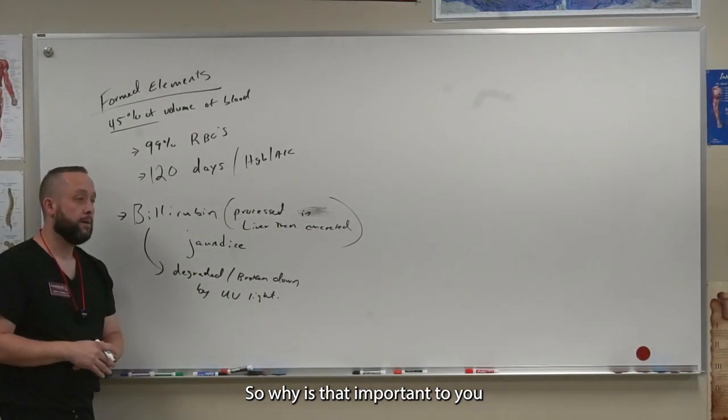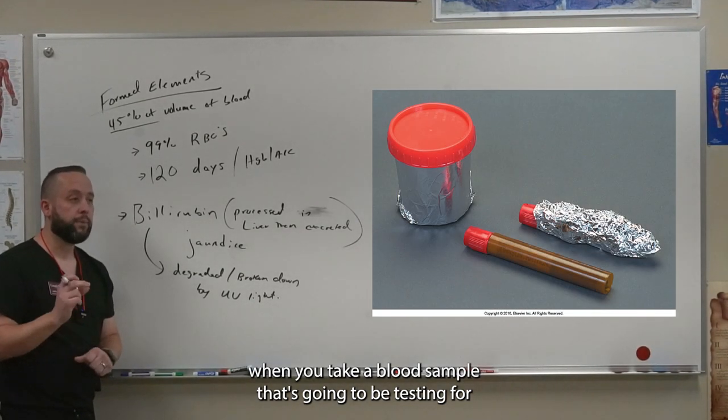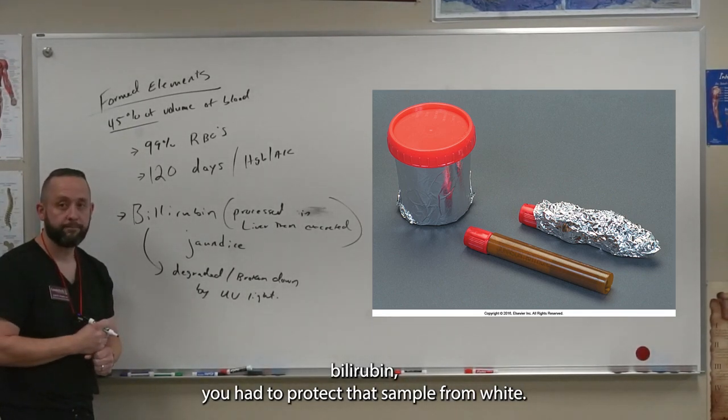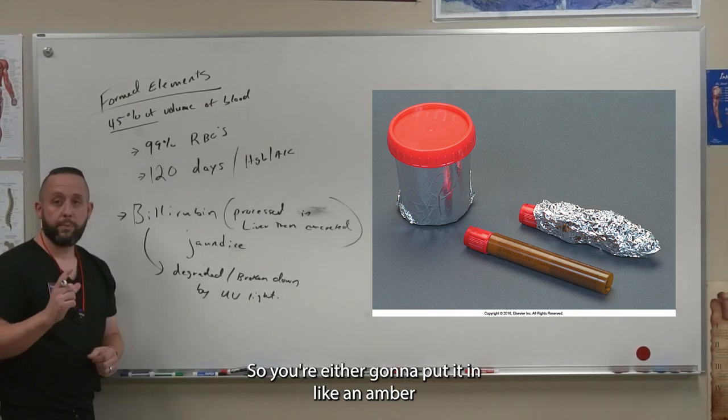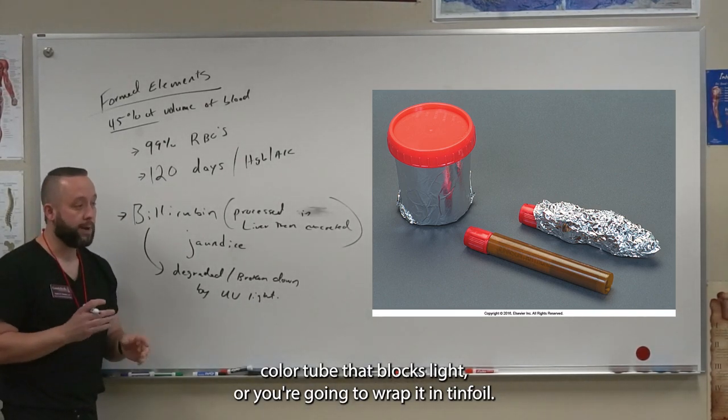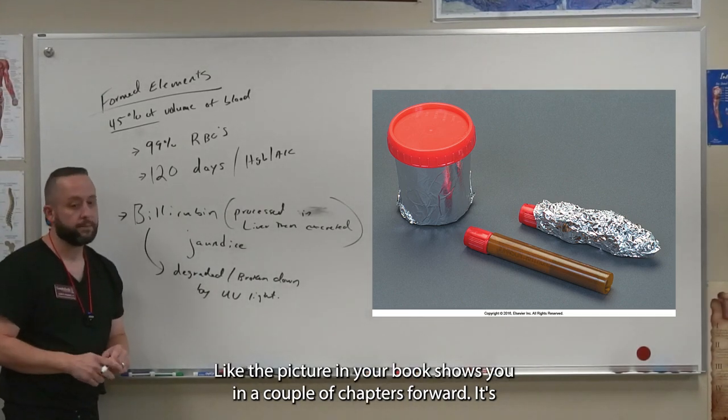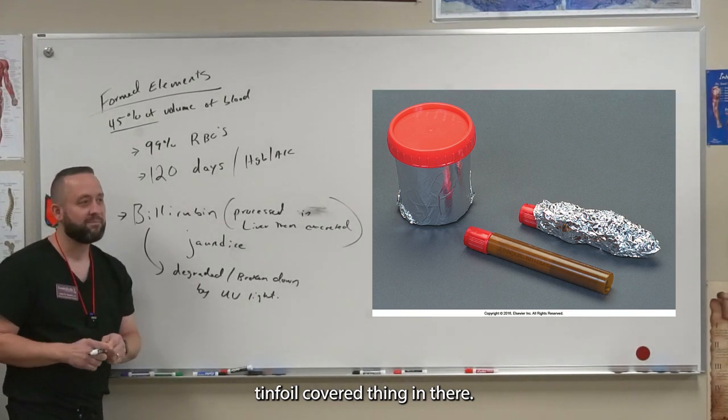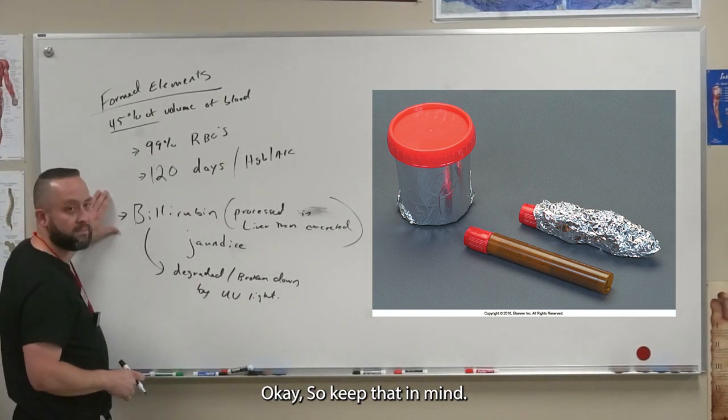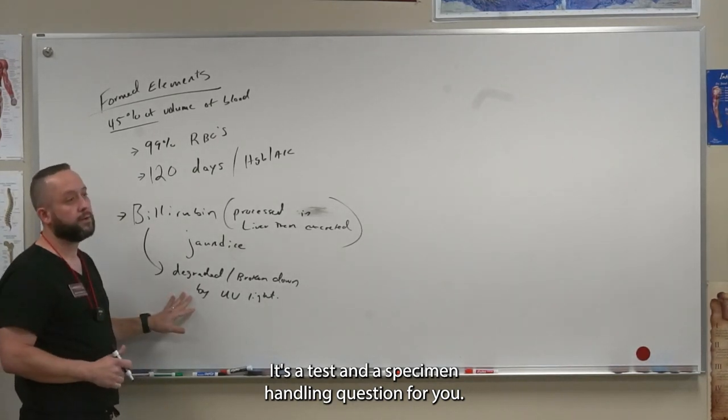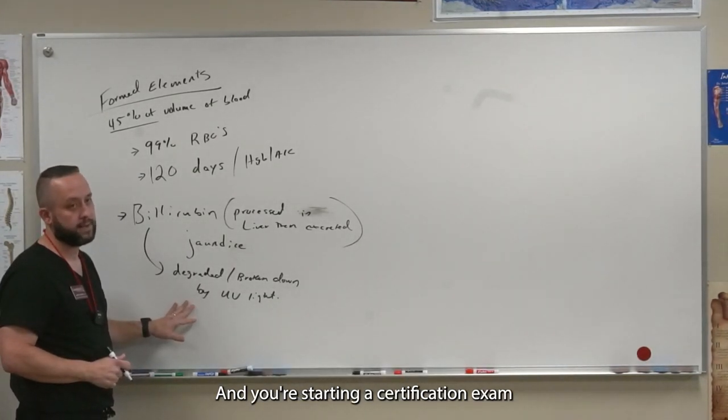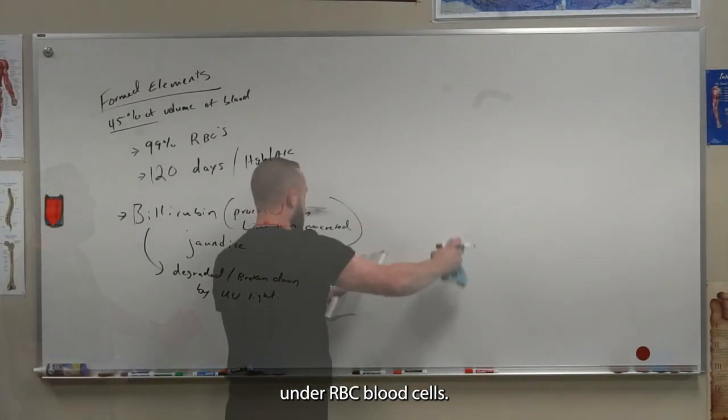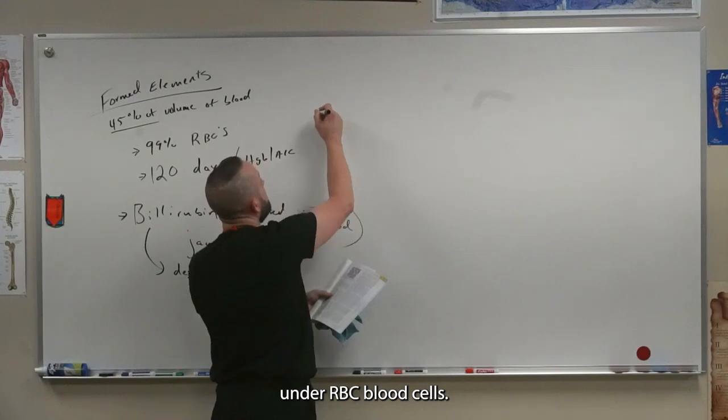So why is that important to you? When you take a blood sample that's going to be testing for bilirubin, you have to protect that sample from light. So you're either going to put it in an amber colored tube that blocks light, or you're going to wrap it in tinfoil like the picture in your book shows you. It's a test and a specimen handling question for your certification exam. Handling specimens under RBC blood cells. Here we go.